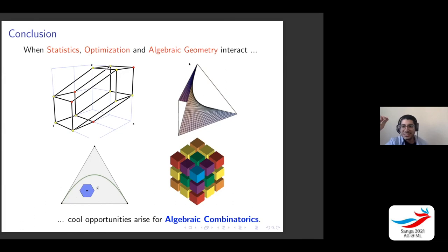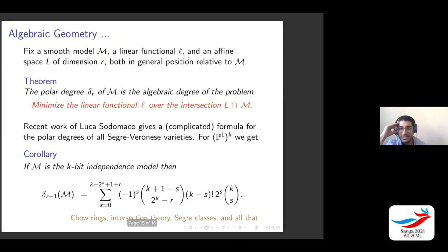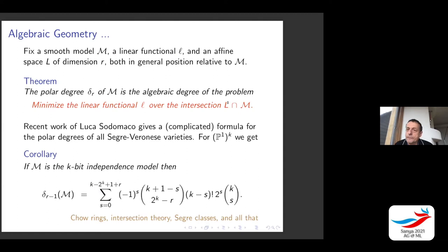Can I ask a question? So you had this general linear function — is there any special case you're interested in where it's not in general position? Yes, of course. The linear functional l and affine space L will come from a face and the affine span of some face of the unit ball. Both l and L come from the description of the polytope and will be very special. So these bounds are simply upper bounds — as often in algebraic geometry, the degrees are typically lower because the specific linear spaces come from the facial structure of the unit ball, which is highly structured since these are polytropes.